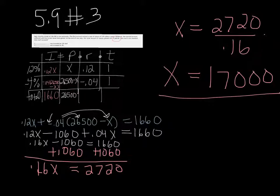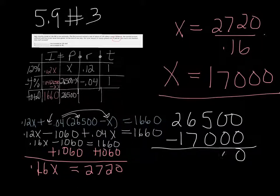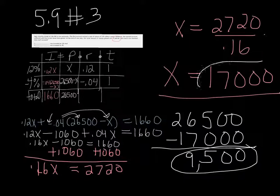And how much was invested at 4%? Well, if we want to find that, all we need to do is go back to our table, and the principal for the 4% would be 26,500 minus X. So let's do that, minus 17,000. So the amount that went in this 4% account that lost money was 9,500. Those circled answers are your two answers.